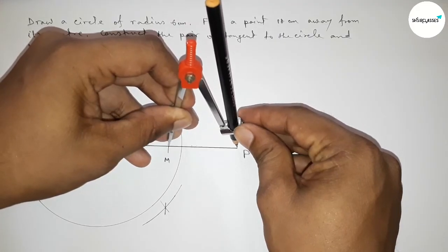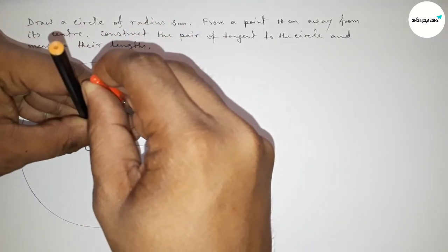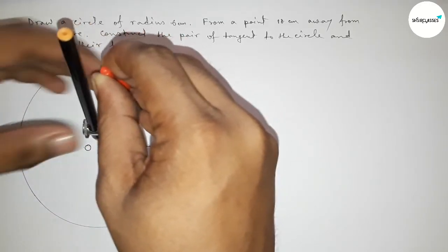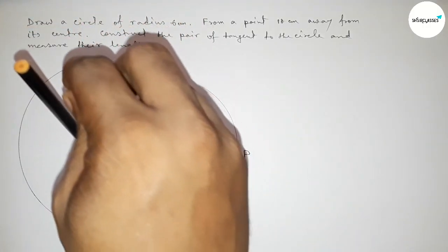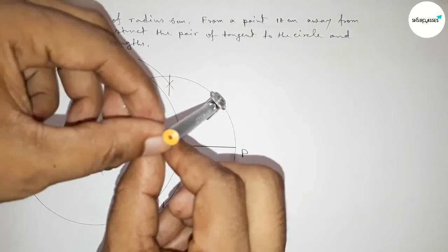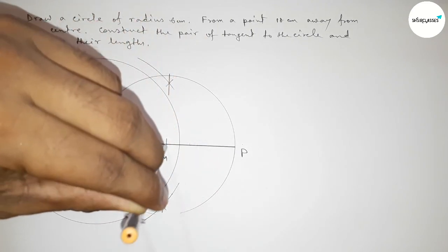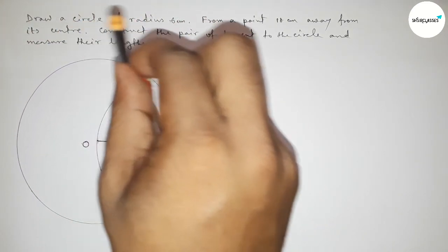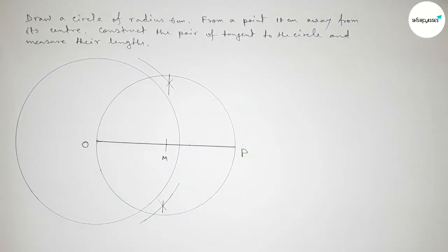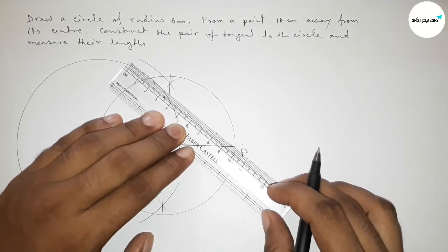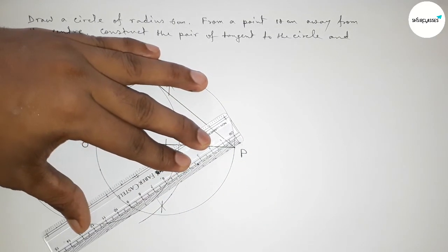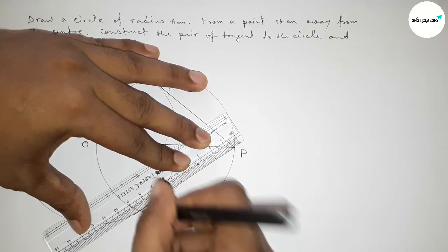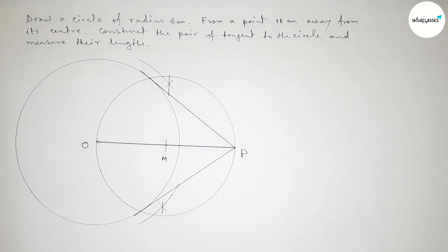Joining the line that bisects OP, marking the midpoint as M. Now we have to draw a circle with center M and radius MP and MO — that is, a circle through point P and O. Drawing this circle, it meets the original circle at two points.